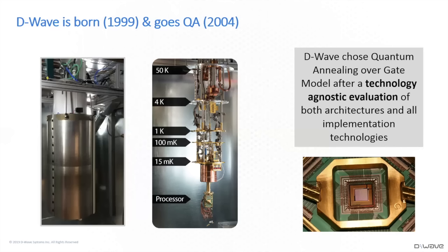What you're seeing here are pictures from the inside of our current generation system. On the left side is the outside can of a pulse tube dilution refrigerator. If you take out that can and all the other cans inside it, you'll expose the assembly shown in the middle. We drop down to 50 Kelvin — roughly liquid nitrogen — then 4 Kelvin, roughly liquid helium. To get colder than liquid helium, you have to actually use both isotopes of helium, helium-3 and helium-4, and you can get down to about 10 or 15 millikelvin, which is more than 100 times colder than deep space.